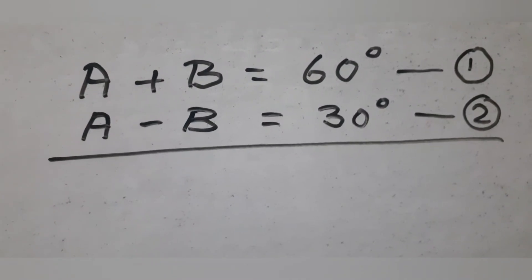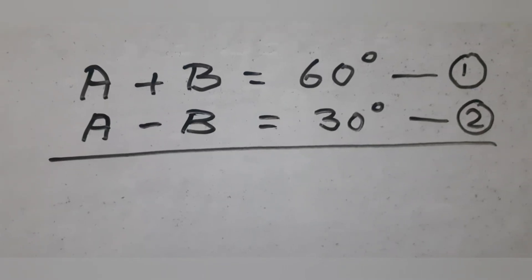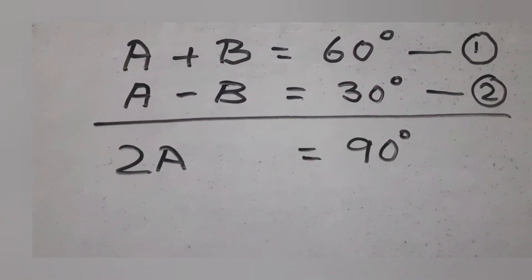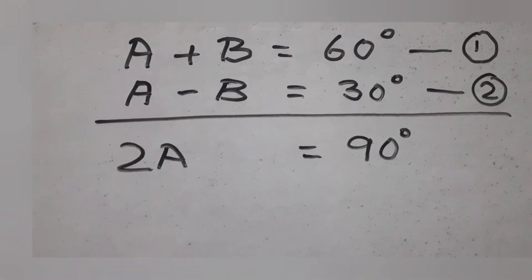We eliminate B by adding the two equations. Adding them gives 2A = 90°, or A = 90/2, so A = 45°.